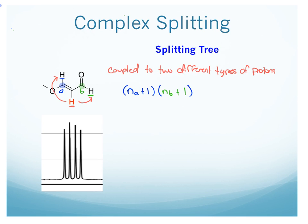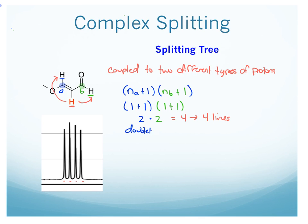Basically it couples with each of these protons individually. On carbon A, there's one proton, so N equals 1. And then on carbon B, there's one proton, so N equals 1. So we get essentially 2 times 2, which equals 4. And we do have 4 lines in the spectrum. We call this a doublet of doublets, because it couples with proton A and gives a doublet from A, and it couples with proton B and gives a doublet from B.